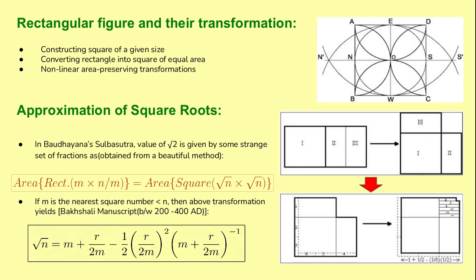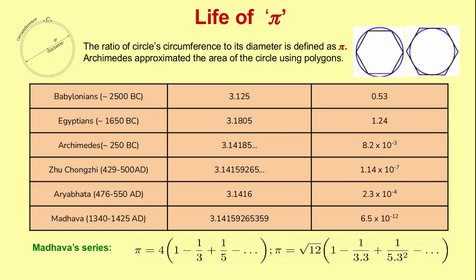The ratio of circumference to the diameter of a circle is defined as the constant Pi. Mathematicians have been trying to find the value of Pi as accurately as possible. Archimedes was the first person to approximate the area of a circle using two inscribed and circumscribed polygons. Aryabhata might have used a polygon of 384 sides to determine his value of Pi. Interestingly, he used the term Asanna, meaning approximate, for his value. Nilakantha, who wrote a commentary on the works of Aryabhata, clearly mentions that Asanna is used because Pi is irrational, making him the first person in history to conjecture the irrationality of Pi.